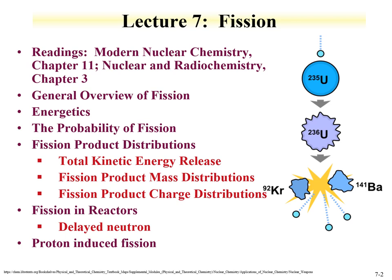We've already touched on this through the cross-section. We saw that certain isotopes have a high cross-section in terms of fission from absorption of a thermal neutron. We'll talk about fission product distributions, including total kinetic energy release, the mass distribution, and charge distribution.